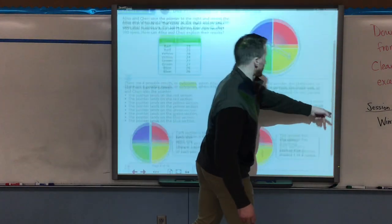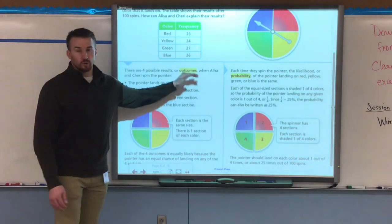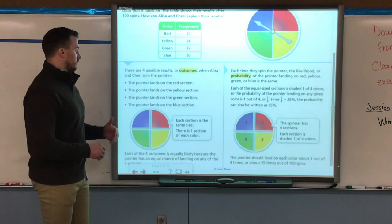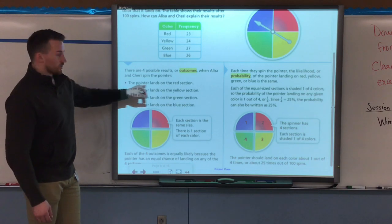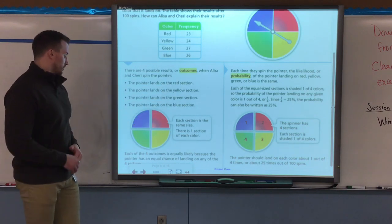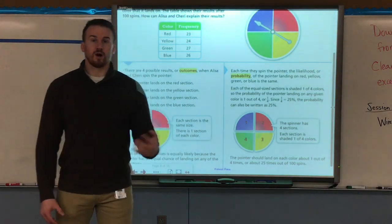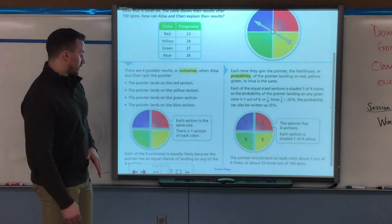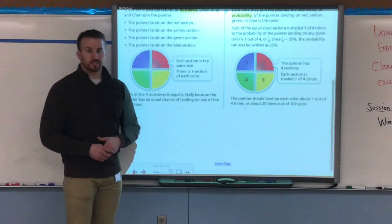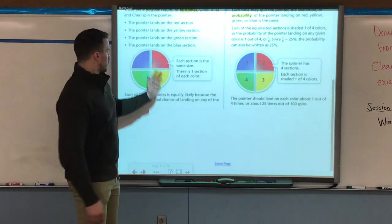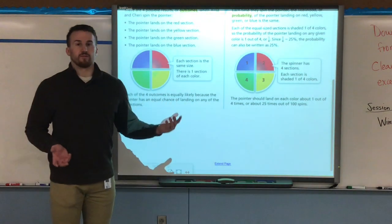There are four possible results or what we call outcomes. Outcomes are results of an experiment. When Alyssa and Jerry spin the pointer, it can land on red, yellow, green, or blue. Each section is the same size, so divided into four sections, all four are the exact same size. Each of the four outcomes is equally likely because they are the same size. If for example the red was one half then it wouldn't be equally as likely because red would be half of it while the other colors would be a fourth or even less.